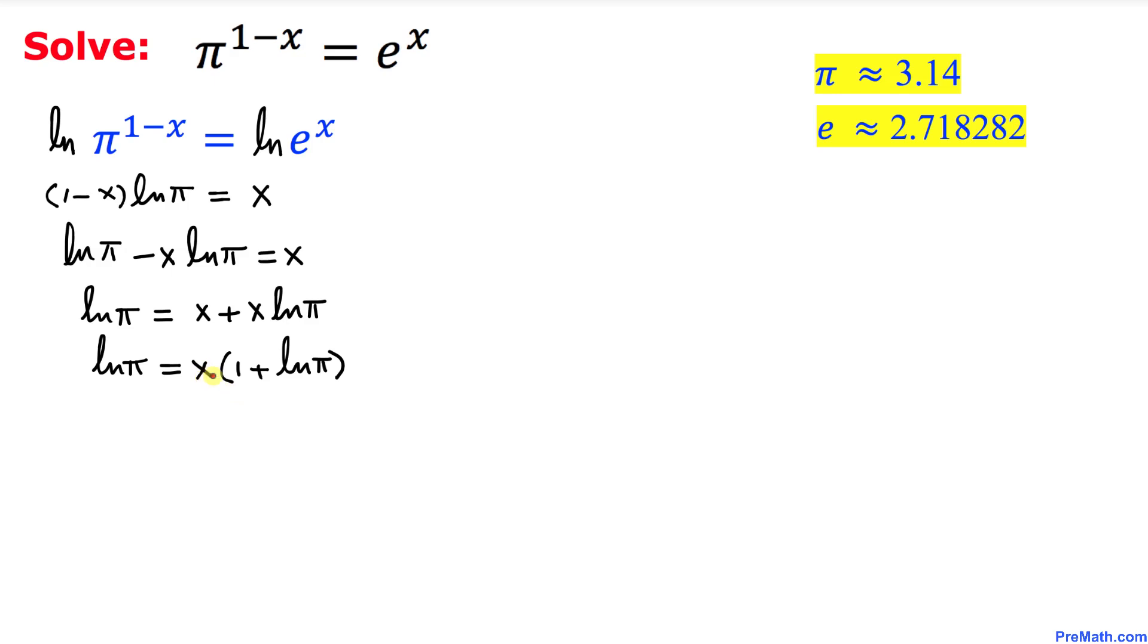So let's go ahead and isolate this x. So I'm going to divide both sides by 1 + ln(π) on this side and 1 + ln(π) on this side. So therefore this quantity is gone with this quantity. So we ended up x = ln(π)/(1 + ln(π)).